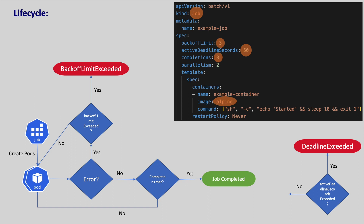When we give completions as greater than 1, by default pods are created one by one sequentially. But we can create the pods in parallel by setting the parallelism. For example, if parallelism is set to 2 and completions to 3, two pods will be created the first time. Once they are completed, another one pod will be created. This is the lifecycle of a job.